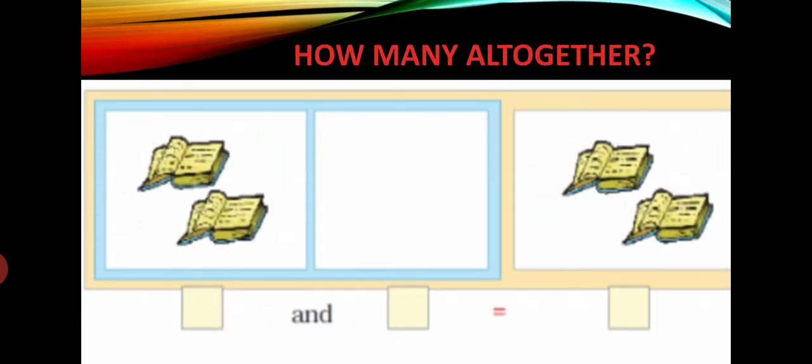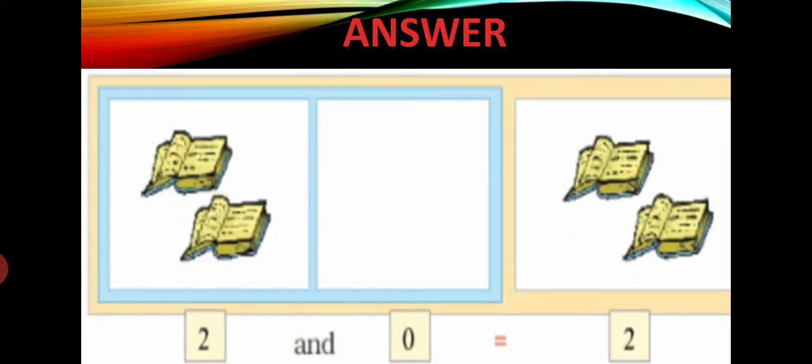Next. How many all together? So how many books? You are seeing 2 books. And in the next box can you see any book? No. So 2 and 0. 0 means no value. 2 and 0 is equal to 2. So how many all together? 0 has no value, so 2 and 0 is equal to 2. Or 2 plus 0 is equal to 2.